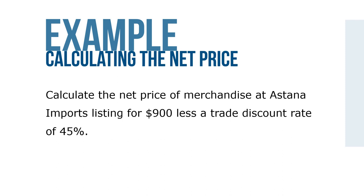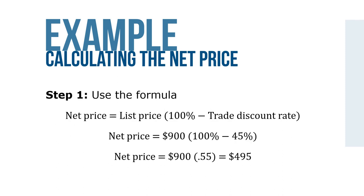For example, calculate the net price of merchandise at Astana Imports listing for $900 less a trade discount rate of 45%. Using the formula net price equals list price times (100% minus trade discount rate): $900 times (100% minus 45%) equals $900 times 55%, which equals $495.